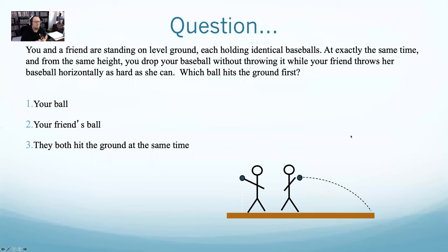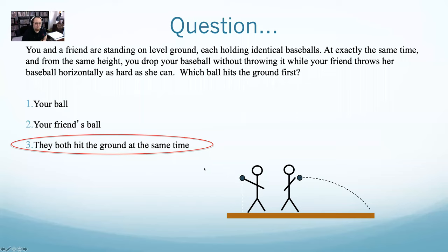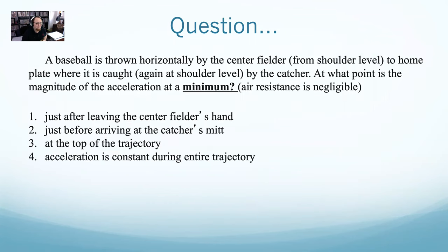Here are two questions that in class I do show of hands on. Two people are standing on level ground, each holding identical baseballs at the exact same time from the same height. One drops a baseball, another one throws the ball horizontally. We showed this already — they will both hit the ground at the same time. This next one though, I'm going to actually have you guys answer: a baseball is thrown horizontally by a pitcher from shoulder level. The home plate catch is made, again at shoulder level, by the catcher. At what point is the magnitude of the acceleration at a minimum — when it's thrown, when it's caught, at the top of the trajectory, or is acceleration constant everywhere?